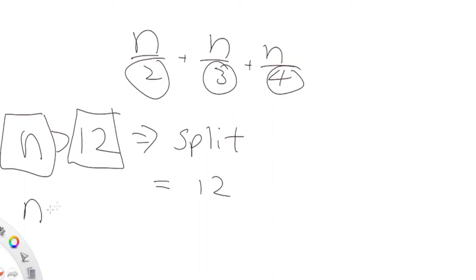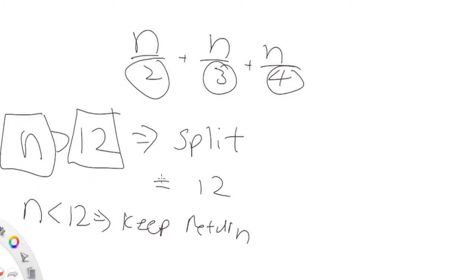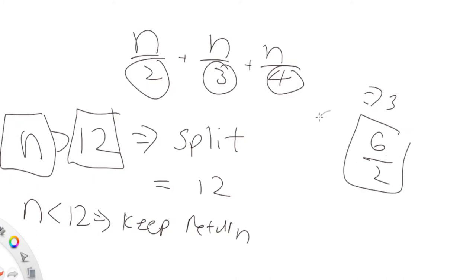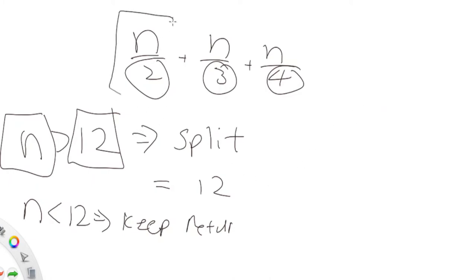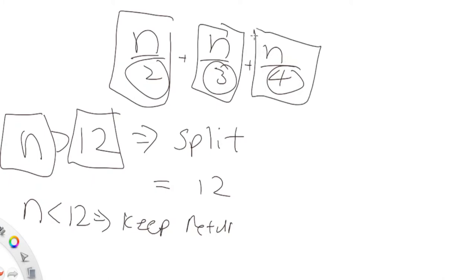Anything less than 12: just keep the original value and return it. Now the big question is how to make this faster, because if we keep splitting by 2, 3, and 4 repeatedly, we'll recalculate the same subproblems over and over again. For example, 6/2 = 3 — I don't want to calculate that again and again. So we're going to use memoization: every time we calculate a value for N/2, N/3, or N/4, we store it in a map.